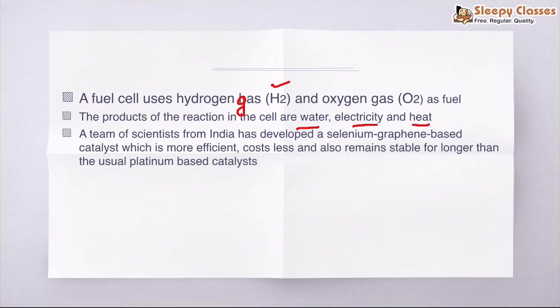This is in news because a team of Indian scientists have developed a selenium-graphene based catalyst which is more efficient, costs less, and remains stable for longer time. Otherwise, we use platinum-based catalysts. Catalyst basically speeds up the reaction. So now because of selenium-graphene based catalyst by Indian scientists, the cost of fuel cells will be reduced and it will be more stable. This can be an alternative.